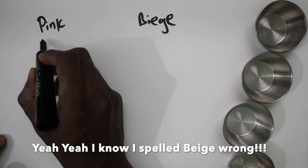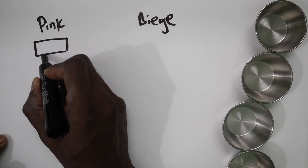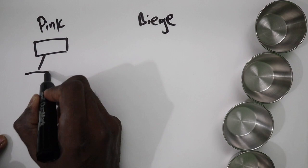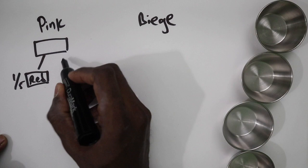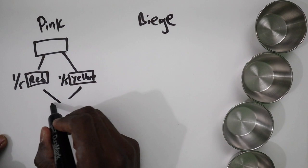Basically, you have white, right? And with the white you add one-fifth of the white of red, and one-fifth yellow. That will give you your skin tone.